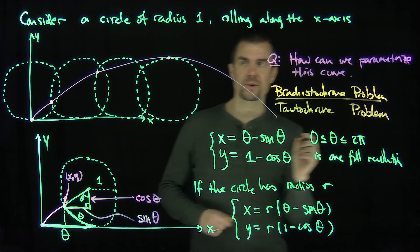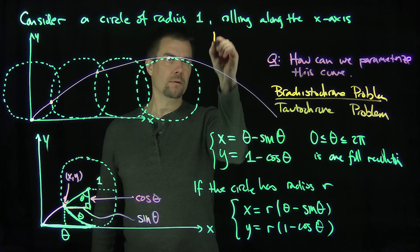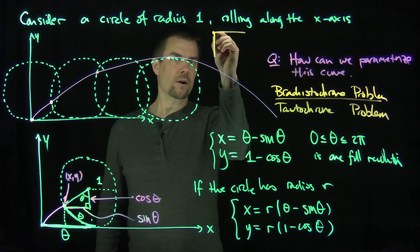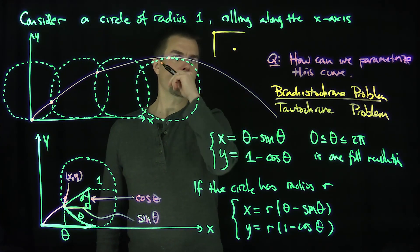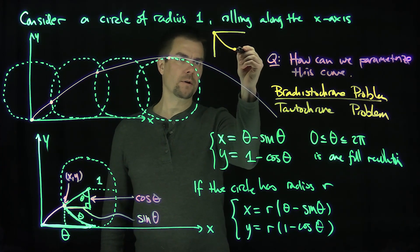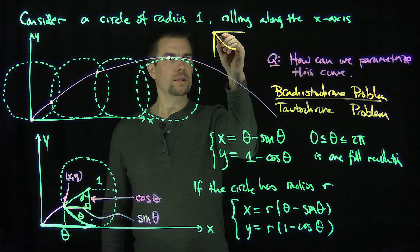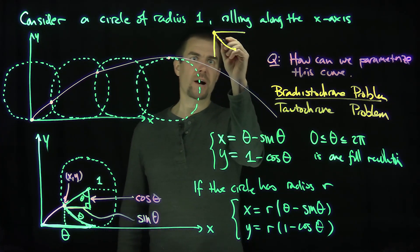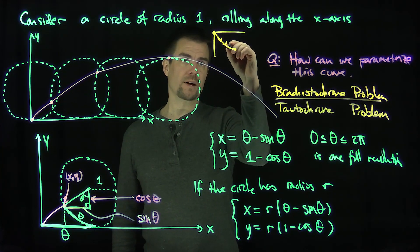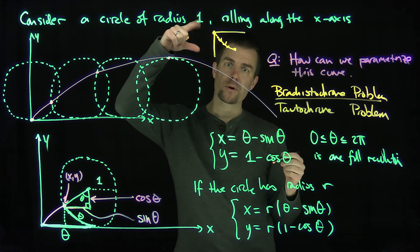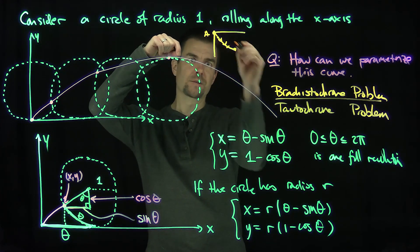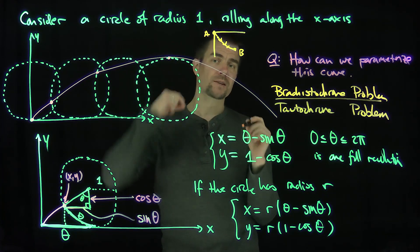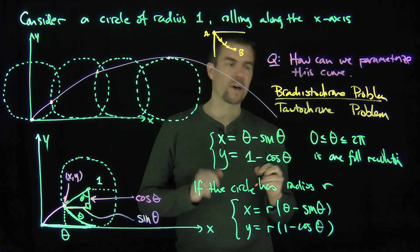The brachistochrone problem is interesting. It says if you have a curve between two points, I'd like to find the curve that moves a particle down from point A to point B as quickly as possible. That's the brachistochrone problem. This curve has no friction on it. So if a bead slides down this curve, how can it go from this point over here A to this point over here below it B as quickly as possible? The inverted cycloid will do that.